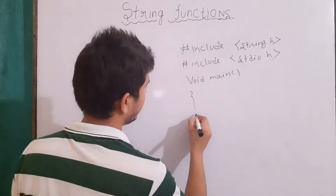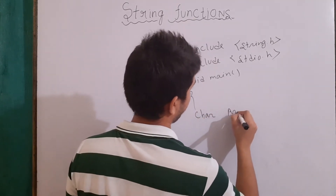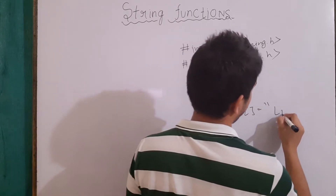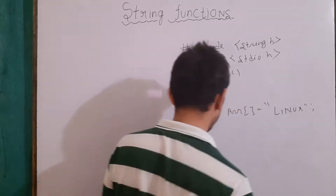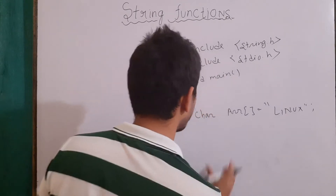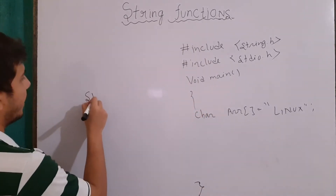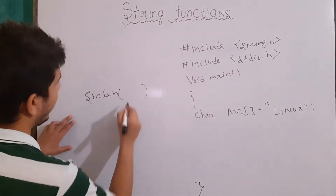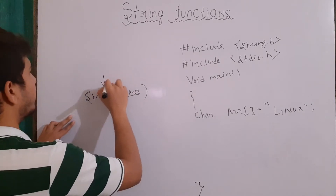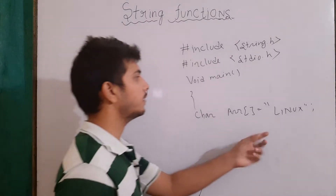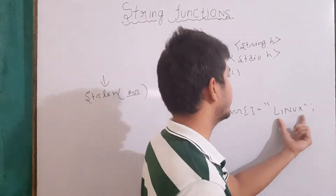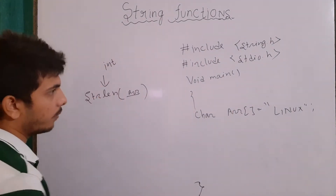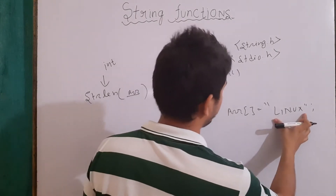Now let's say there is an array. The name of the array is ARR and the content is "Linux". Now our first function is strlen — everything is in lowercase. It will take some array and in the output it will give me the length of that string. Its return type is integer, so it will return the length of our string.